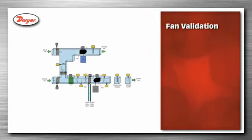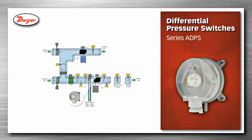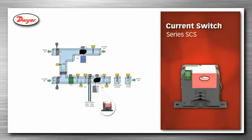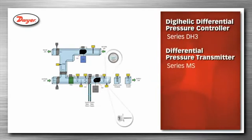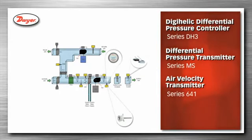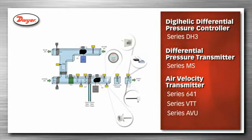Dwyer offers several products that can be used for fan validation, proving that the fan is operating. The differential pressure switch, series ADPS, can be used by monitoring the differential pressure of the fan. Series DCS current switch can be used by monitoring the current usage of the fan. Series DH-3 Digihelic differential pressure controller, series MS differential pressure transmitter, series 641 air velocity transmitter, series VTT air velocity transmitter, or series AVU air velocity transmitter can be used by monitoring the fan air flow or air velocity exiting the fan.